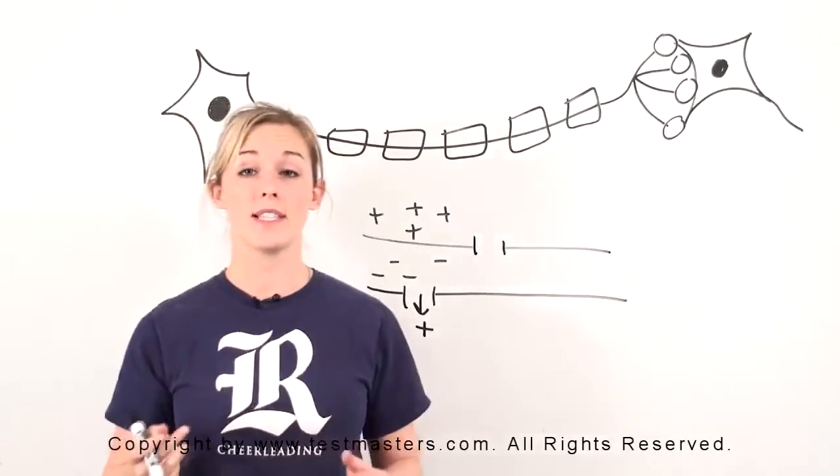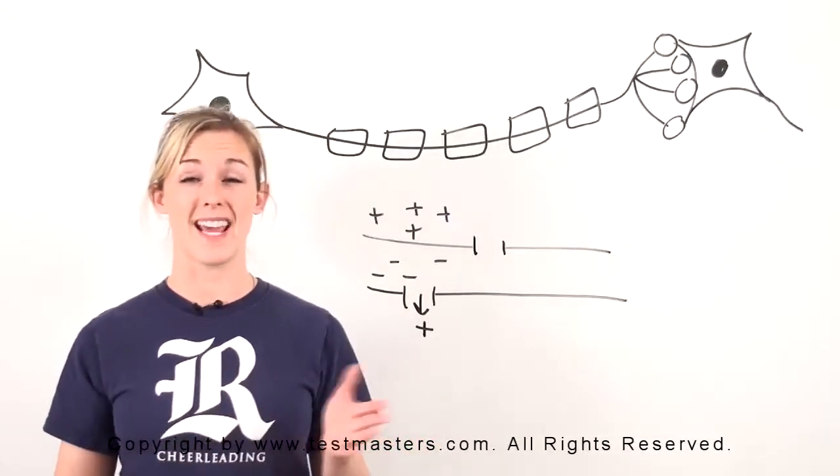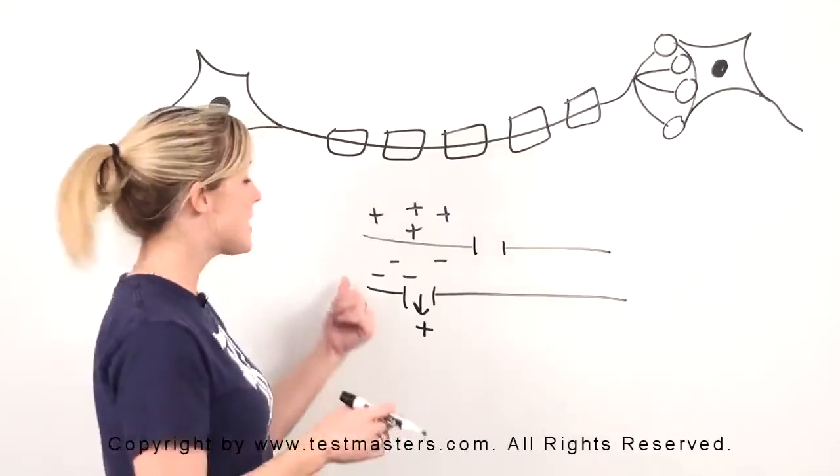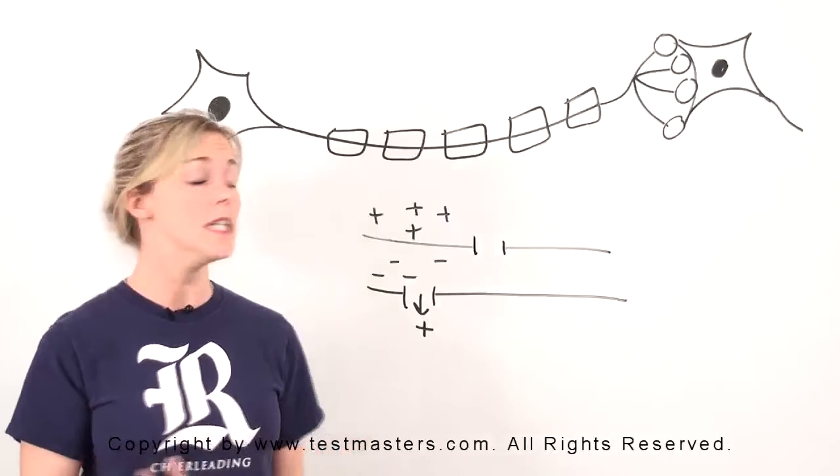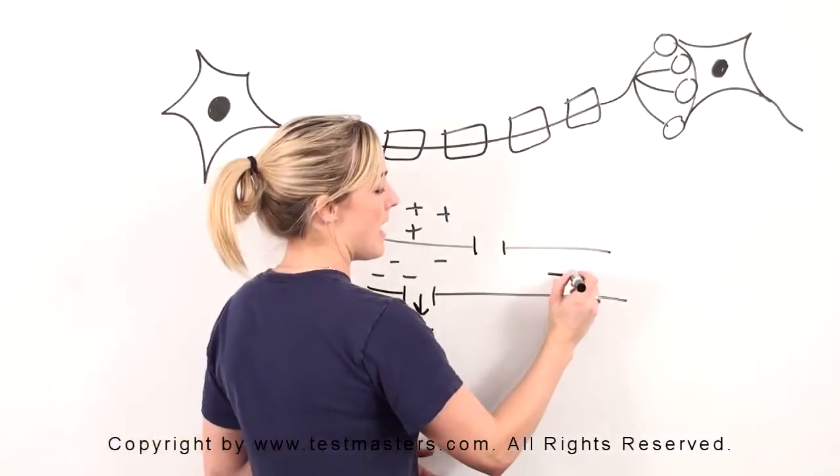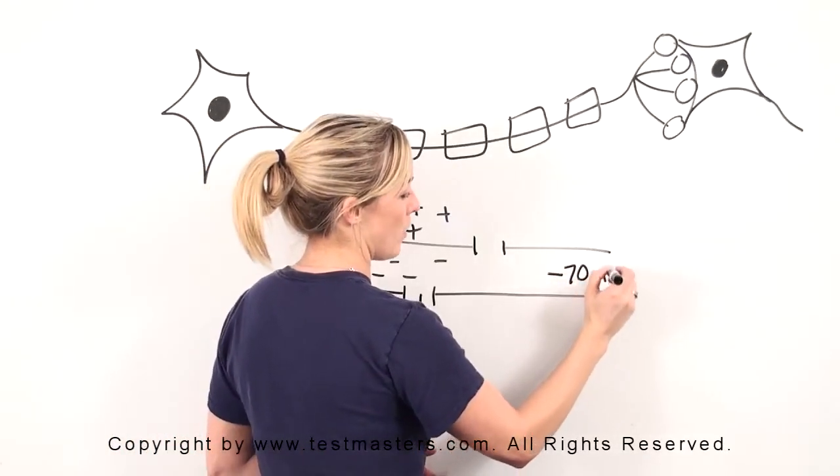Think about it. If you have a cell and you've got a whole bunch of positives leaving, a whole bunch of negatives staying in there, this is going to become more negative. And that negativity is what we call a potential. The potential of a given cell is about negative 70 millivolts.